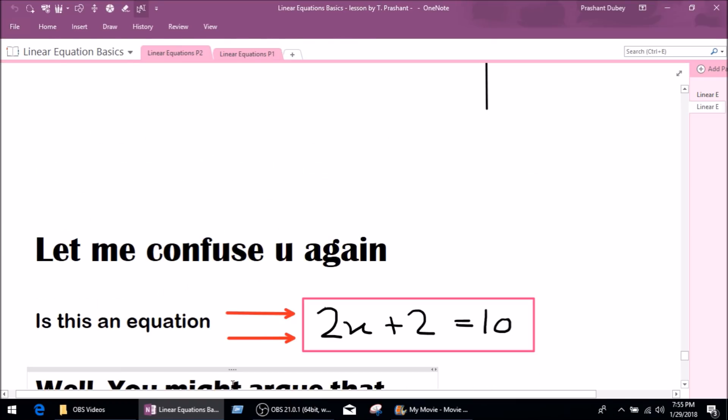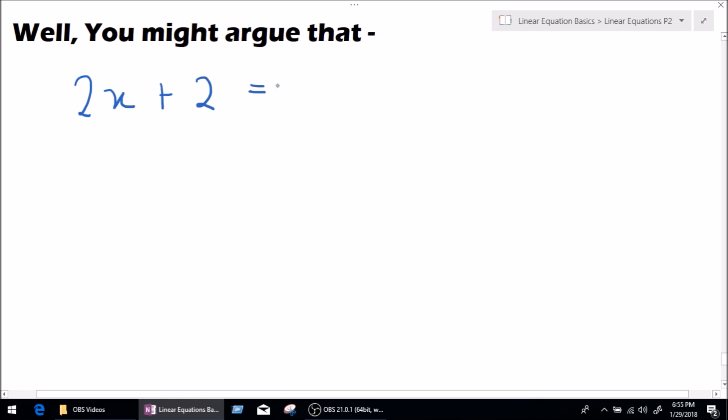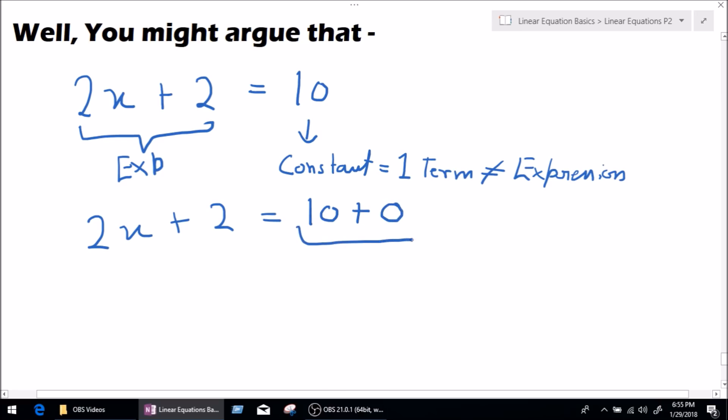Alright, so let's write the equation 2x plus 2 equals 10. Now, you're right, this is an expression, no problem. But, this is not an expression, this is a constant. And, a constant equals one term. Now, if this is one term, this is not equal to expression. Then, how can this be an equation? Well, simple answer is, 2x plus 2 equal, we can change this into an expression by adding 0. When we add 0, the value is still going to be the same, the value will be 10. But, we can call this an expression. So, that's how 2x plus 2 equals 10 plus 0. I hope that helps.